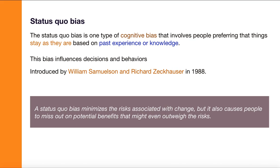The status quo bias was initially introduced by William Samuelson and Richard Zeckhauser in 1988. The status quo bias minimizes the risks associated with change — whenever there is a change there is some uncertainty and risk — but it also causes people to miss out on potential benefits that might even outweigh those risks.